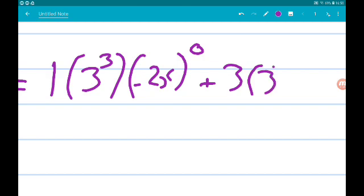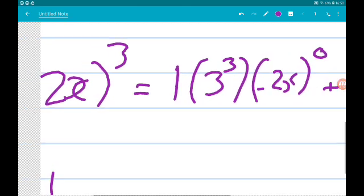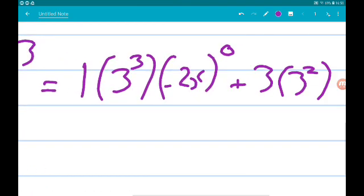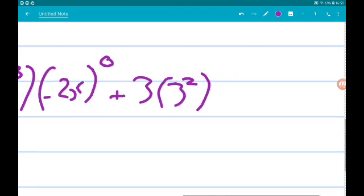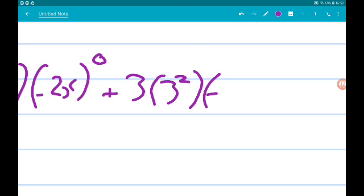Now the power on the 3 goes down by 1, so we get 3 squared. And the power of minus 2x goes up by 1, so we get minus 2x to the power of 1. I'm going to put the powers on the outside of the bracket because we have that minus in there.